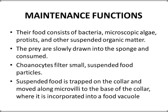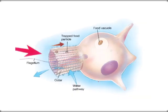The choanocytes are responsible for the filtration of suspended food particles with the help of their collar cells. The collar cells trap those suspended food particles, which then move towards the food vacuole. In the diagram, we can see the trapped food particles being captured by the collar cells and moving towards the food vacuoles. The brown arrow shows the direction of movement of the food.